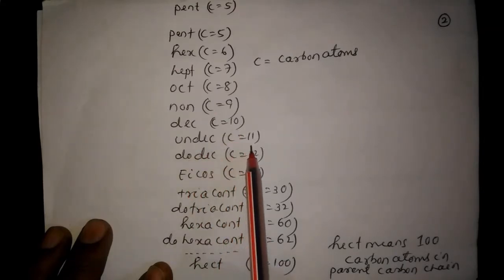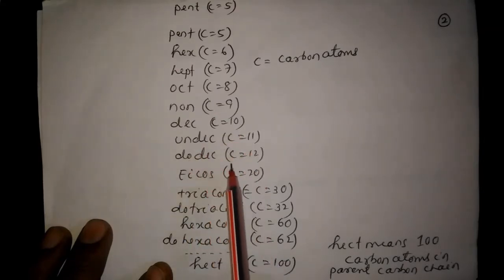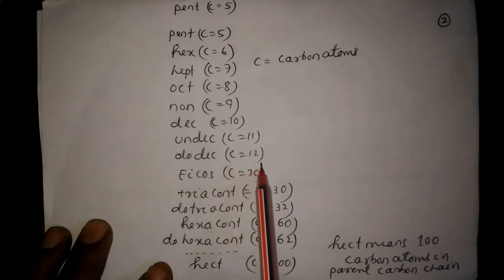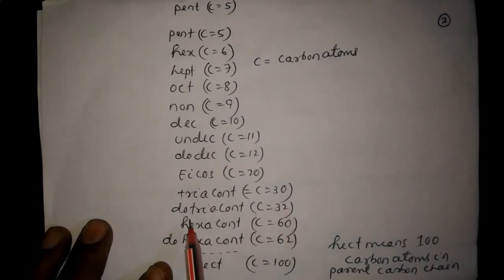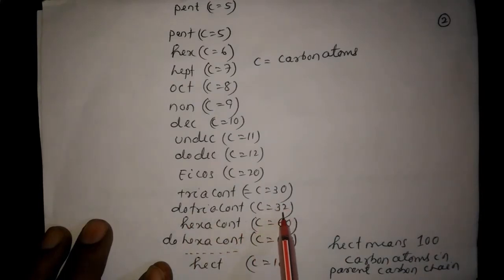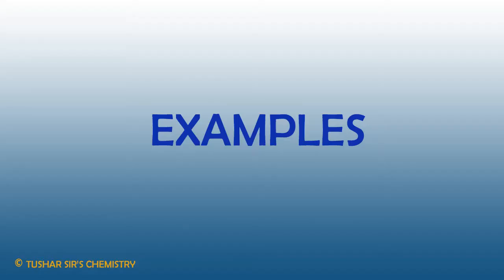Undec means eleven carbon atoms in the parent carbon chain, dodec means twelve carbon atoms, ecos means twenty carbon atoms, triacont means thirty carbon atoms, and dotriacont means thirty-two carbon atoms in the parent carbon chain.